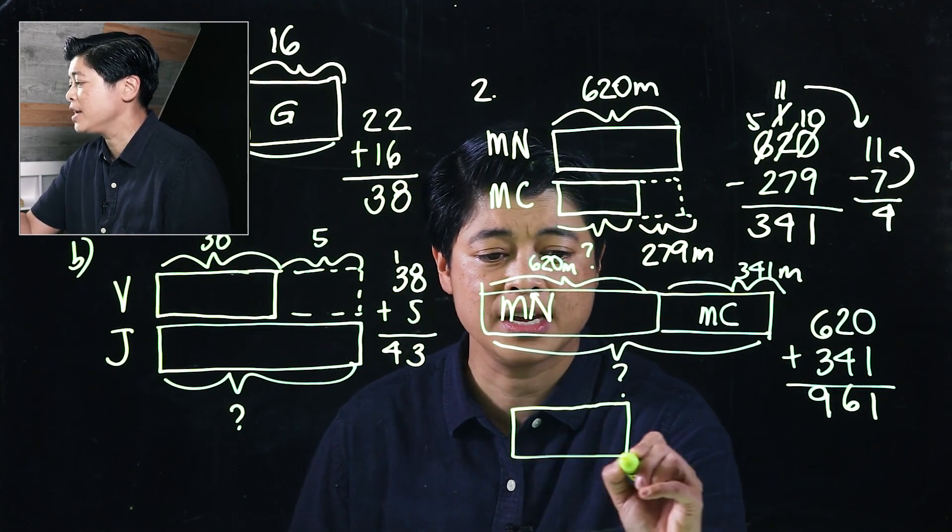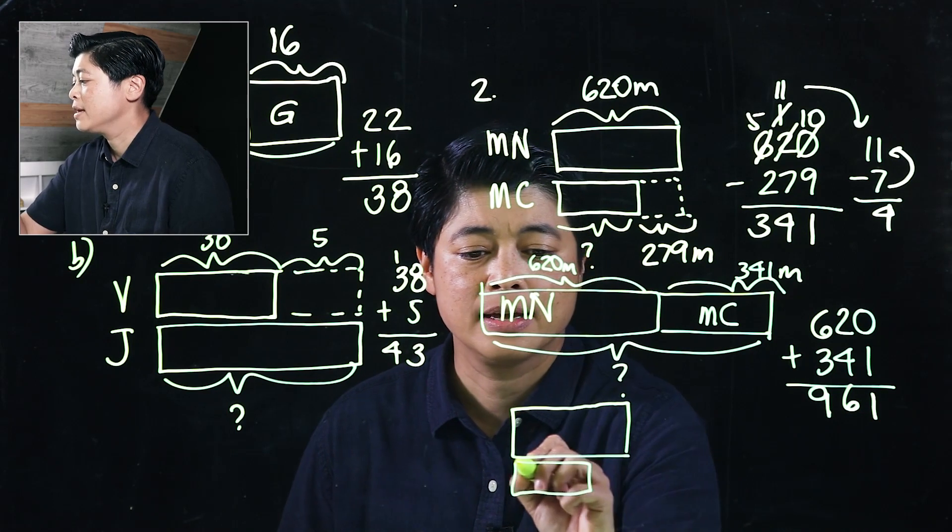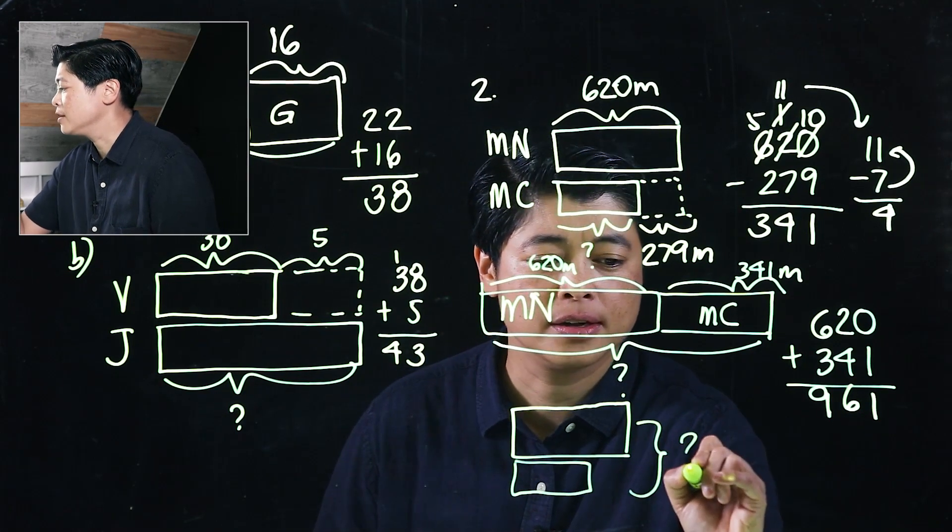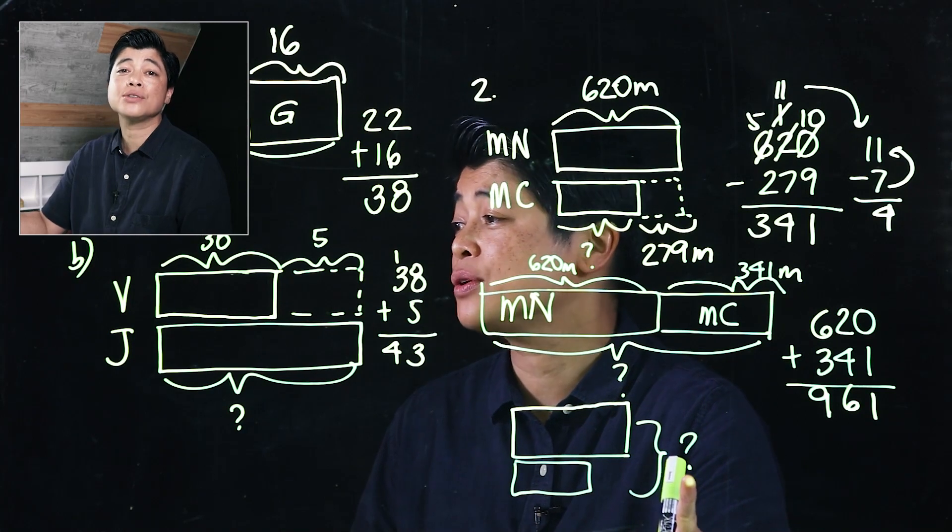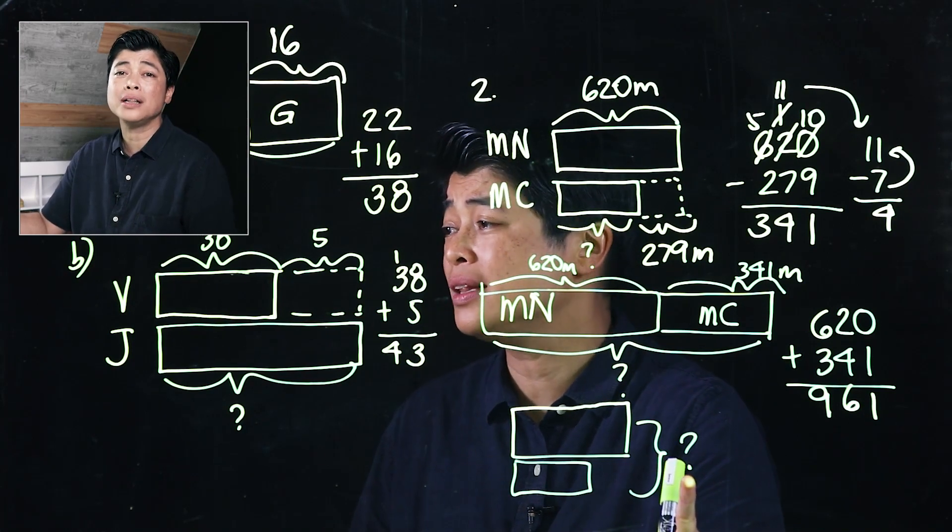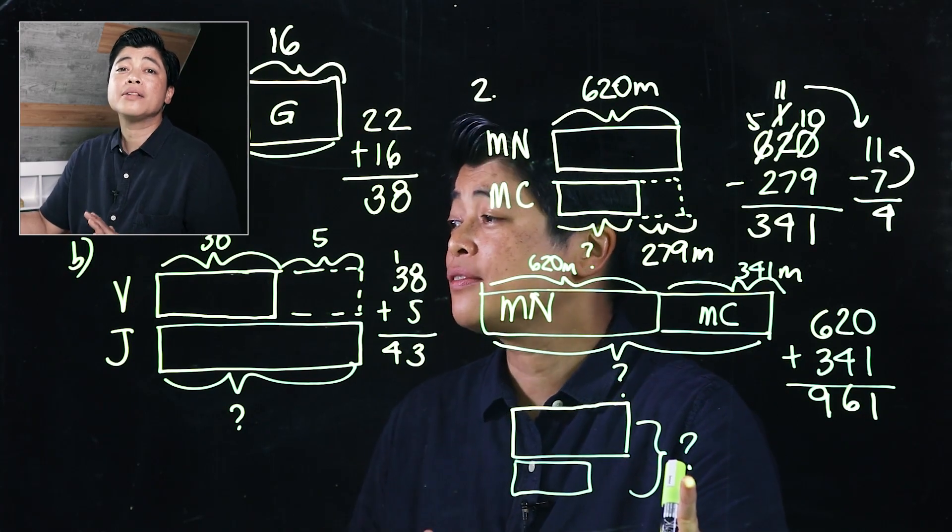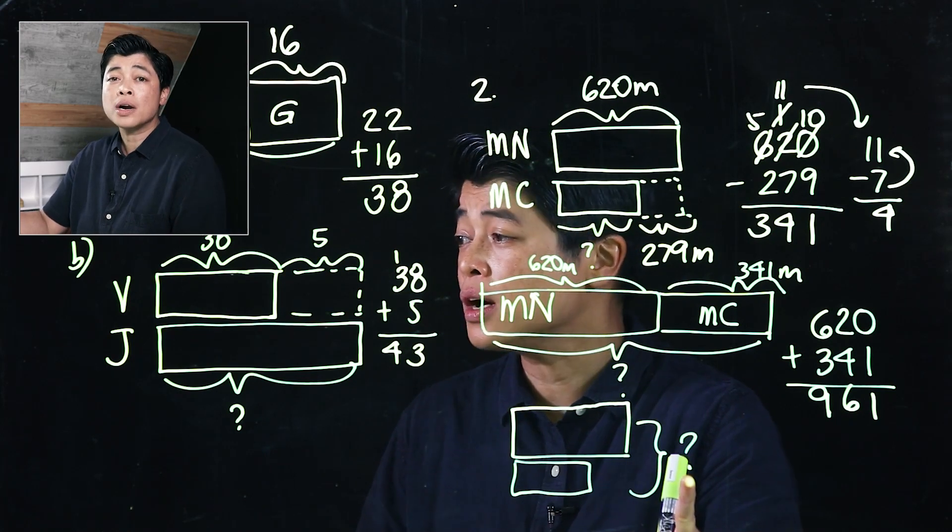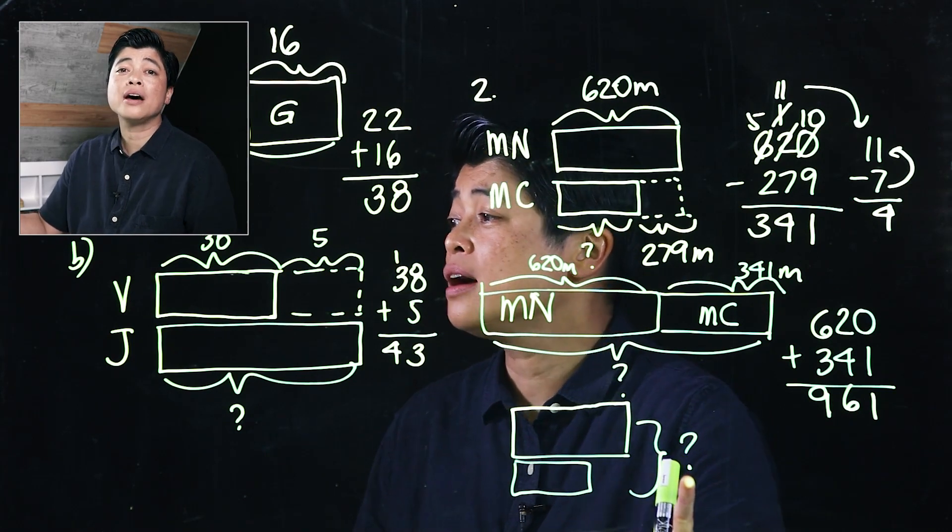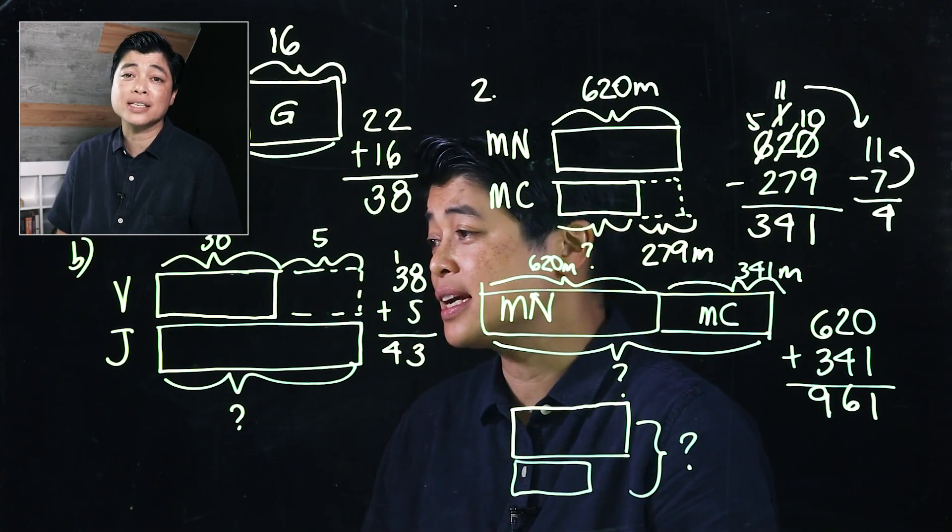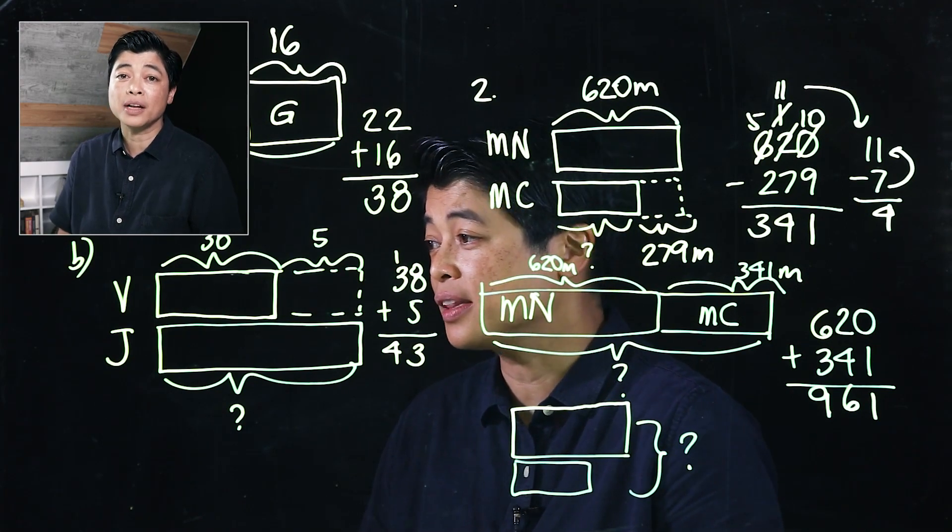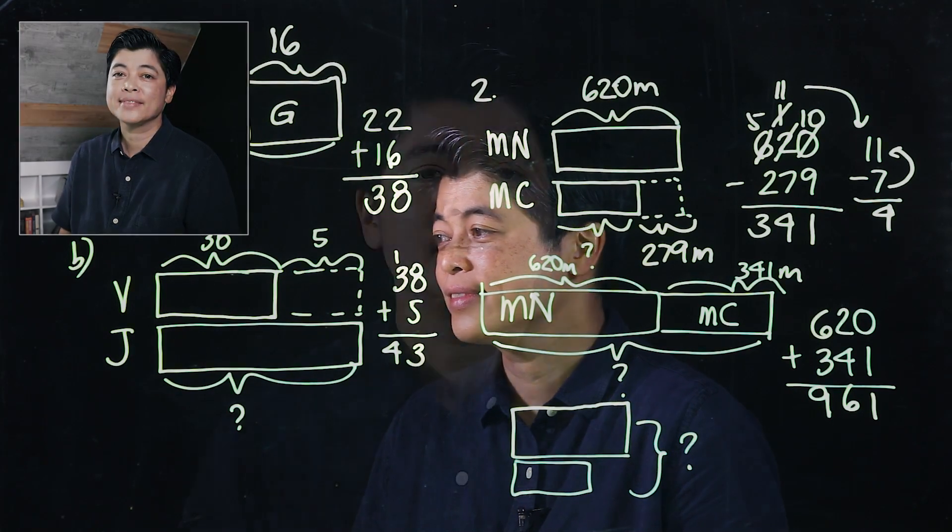So again, in the book, the problem was demonstrated as a continuation of their first bar model. So if they make it so that it's a compare bar model, it's also okay. But for now, the kids are more acquainted with the part-whole bar model, so it's best to demonstrate this as a part-whole bar model. That concludes Chapter 10.